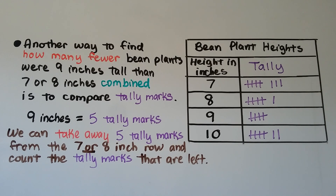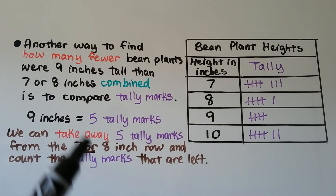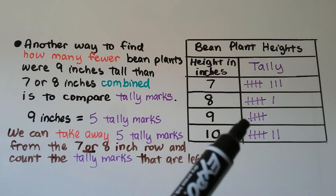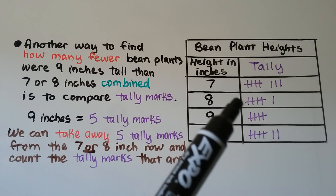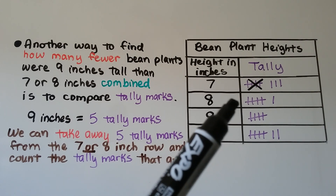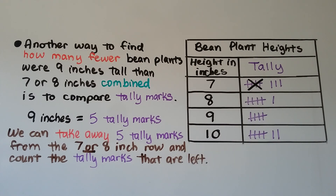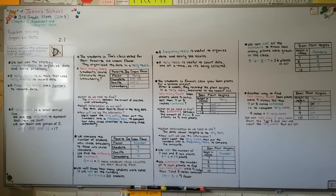Another way to find how many fewer bean plants were nine inches tall than seven or eight inches combined is to compare tally marks directly. We see five tally marks for the nine inches. We can take away five tally marks from the row of seven or eight, and count how many are left — five, six, seven, eight, nine. We can see the difference is nine. So we can use a tally table with tally marks or a frequency table with numbers to help us solve problems.